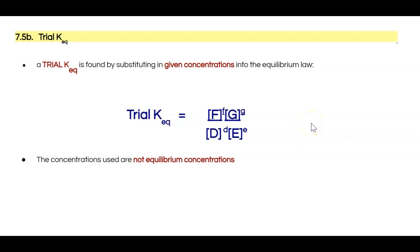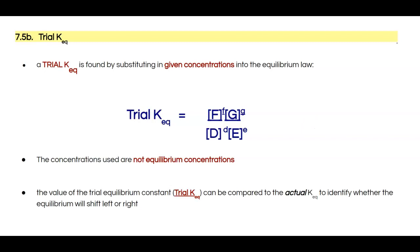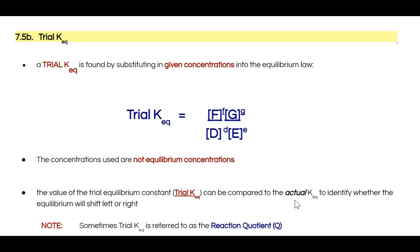Finding trial K_EQ will give us information about where the equilibrium lies when we compare it to the actual known K value for that particular equilibrium system. It's also important to know that trial K or trial K_EQ is sometimes referred to as the reaction quotient, given the symbol Q — I believe that's what our textbook does. So just so you're aware, those mean the same thing.